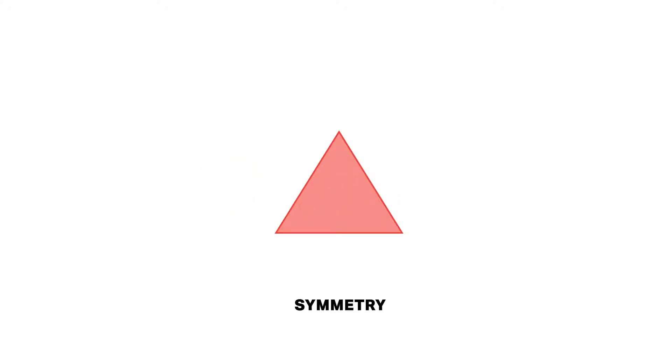What makes a shape symmetrical? A shape is symmetrical when it has at least one line of symmetry.